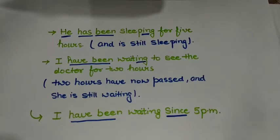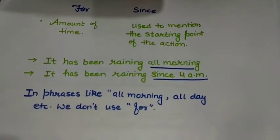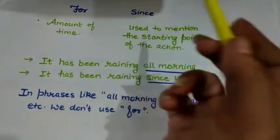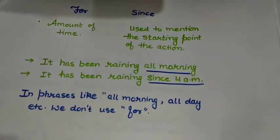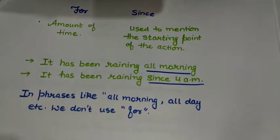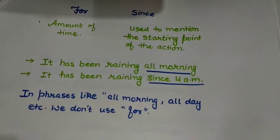One very important thing — and generally people make mistakes here — is the difference between 'for' and 'since.' 'For' is used to tell the amount of time, like 'for two hours' or 'for five hours.' 'Since' is used to mention the starting point of the action, that is, when we started the work. For example, 'I have been waiting since 5 pm' means she started waiting at 5 pm and is still waiting.